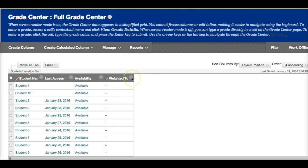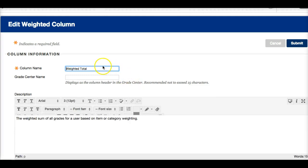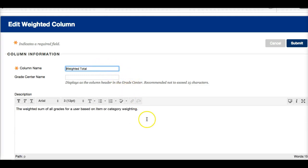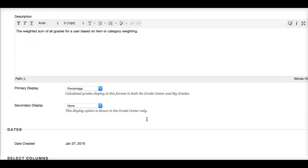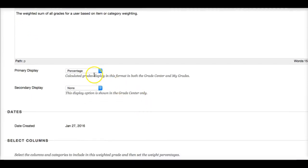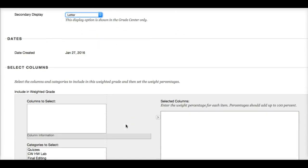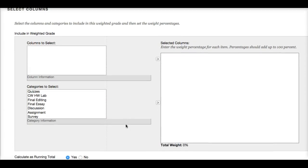We need to go to weighted total. Click on the arrow, and we can edit column information. Column name is weighted total. Go down and primary display is percentage. Secondary display, you can have a letter grade as the secondary display, or you don't have to. And then as you scroll down, select a column.